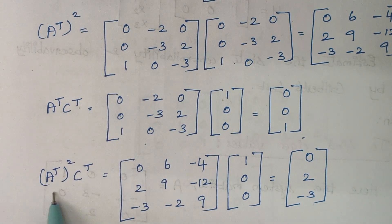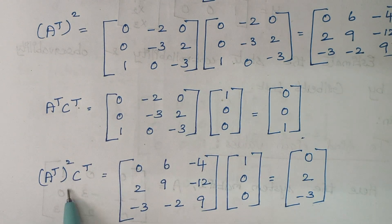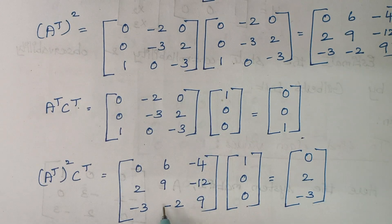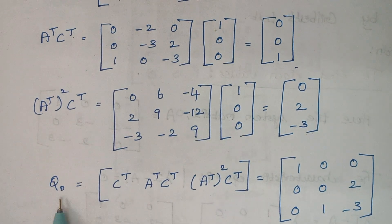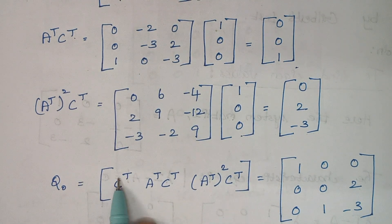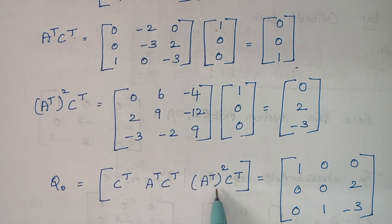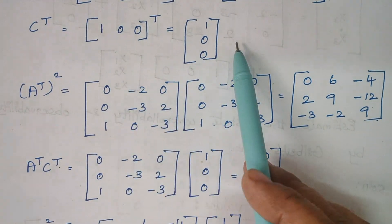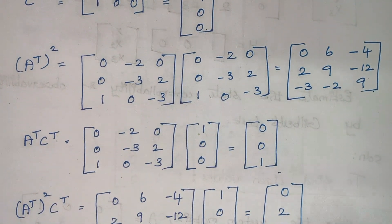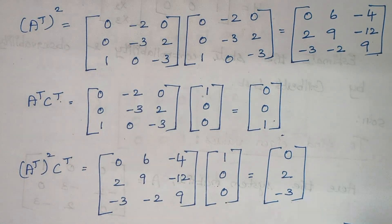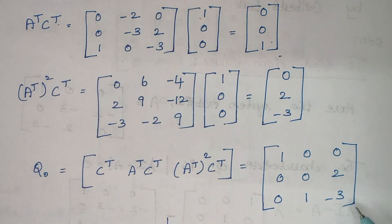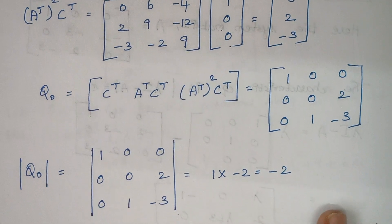We now frame the observability matrix QO. This matrix contains the following elements: C-transpose, A-transpose·C-transpose, and (A-transpose)²·C-transpose. C-transpose was obtained from the given problem, A-transpose·C-transpose has been calculated, and (A-transpose)²·C-transpose has also been calculated. Substitute all values accordingly into the observability matrix.